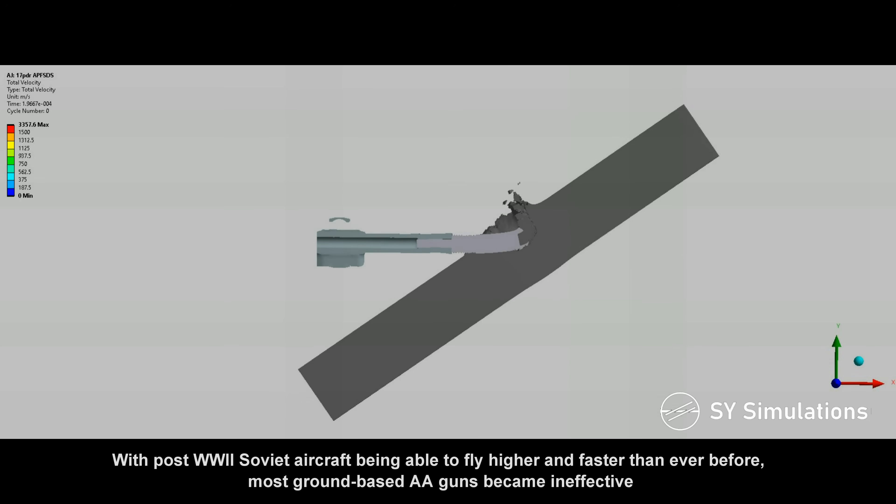With post-World War II Soviet aircraft being able to fly higher and faster than ever before, most ground-based anti-aircraft guns became ineffective.